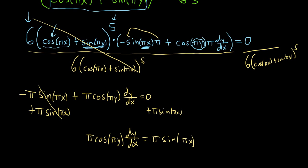And then just divide by π cosine πy. So π cosine πy. And then divide by π cosine πy.